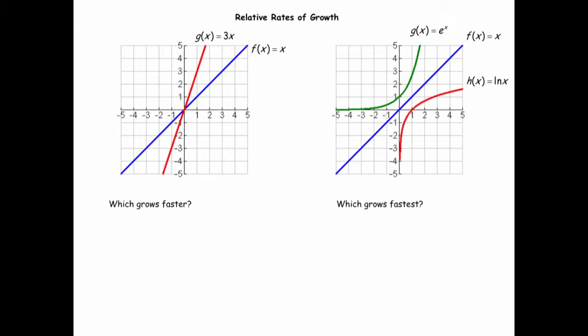In this lesson we're going to talk about relative rates of growth. Once you see the definition of what it means to grow faster and grow slower, we're going to see that this definition allows us to categorize functions in terms of how they behave. As an opening question, if you look at this left graph, which function grows faster? Most students would say g of x equals 3x because the slope is greater than f of x, which is one. But by the definition we use, they actually grow at the same rate — they're both linear.